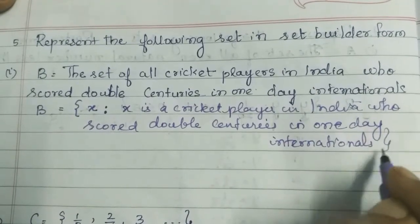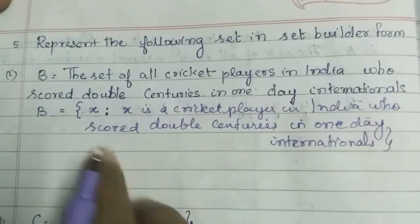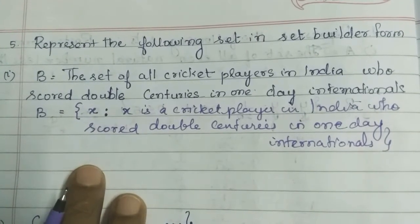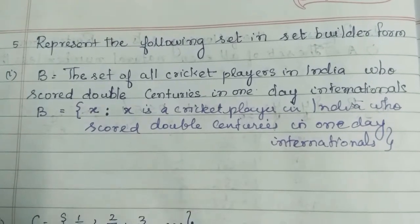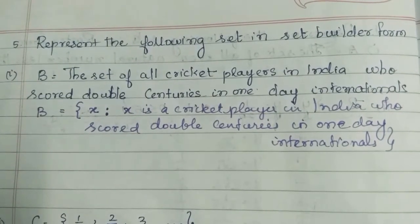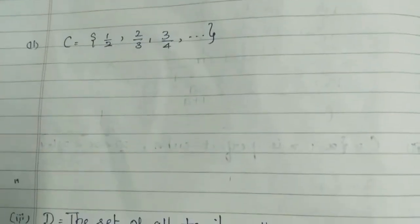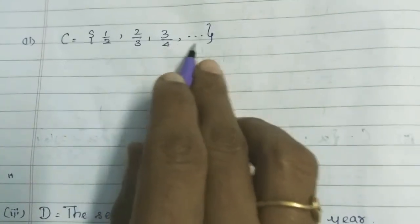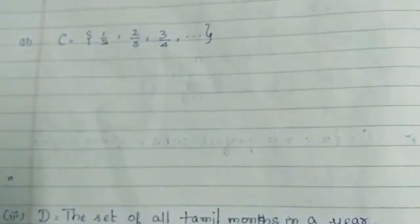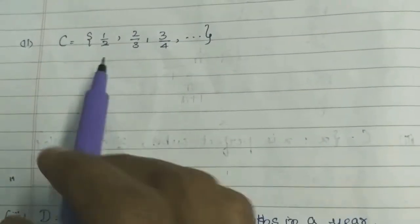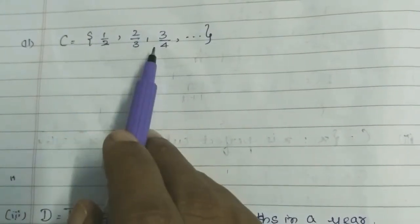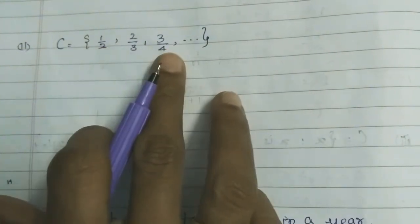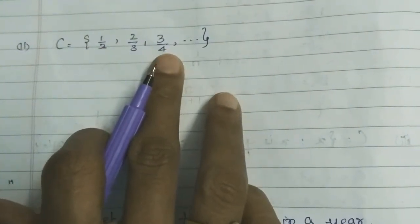So x is a cricket player in India. If you have a roster formula, you can use the rule. If you have a rule, you can fix the rule.